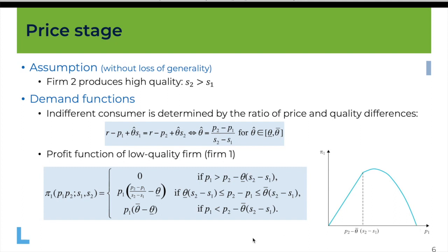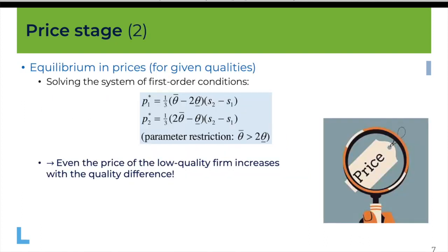You could do the same exercise for firm 2 and obtain a similar profit function. We see that there is a unique maximum, which allows us to use calculus to find the best response functions of the two firms and thereby the price equilibrium. I will spare you the computations and give you immediately the result: this is the Nash equilibrium in prices for given qualities S_2 and S_1, with S_2 larger than S_1.